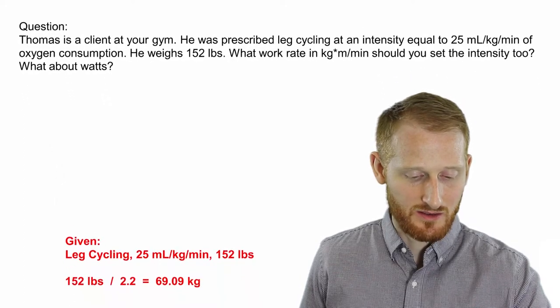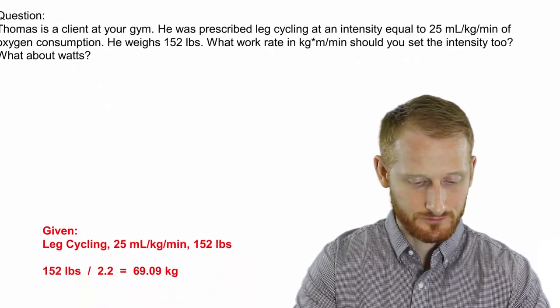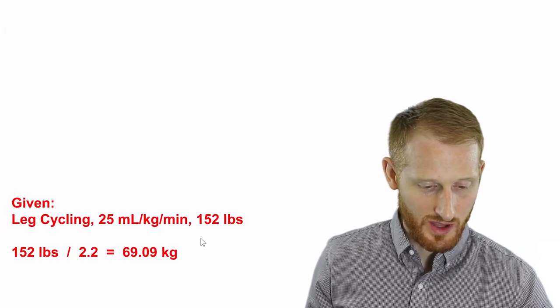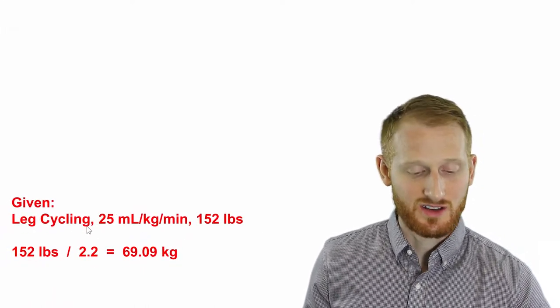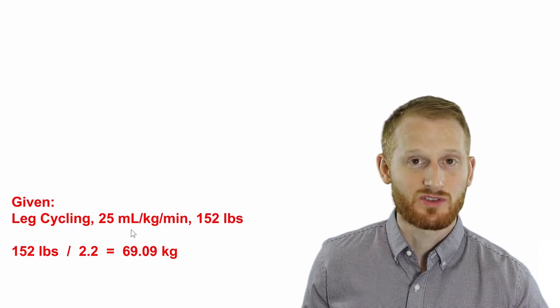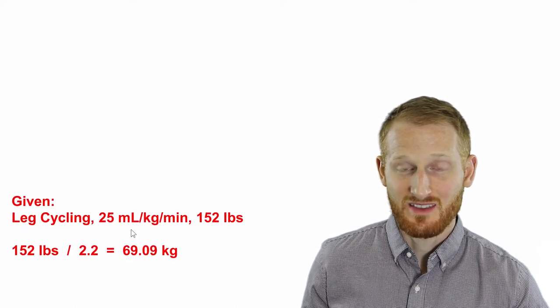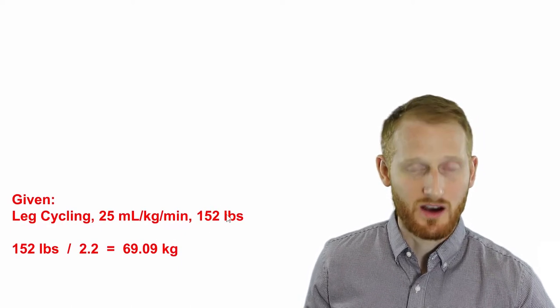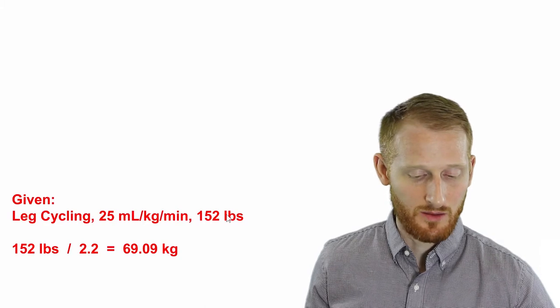Let's look at the given variables here. We have leg cycling as our exercise modality. We have the exercise prescription saying that they should be exercising at 25 mls per kg per minute, and we have the body mass of 152 pounds for the individual.